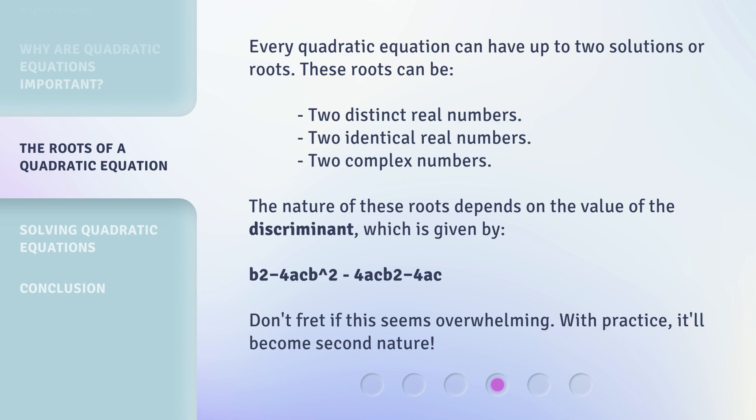The discriminant is given by b² - 4ac. Don't fret if this seems overwhelming. With practice, it'll become second nature.